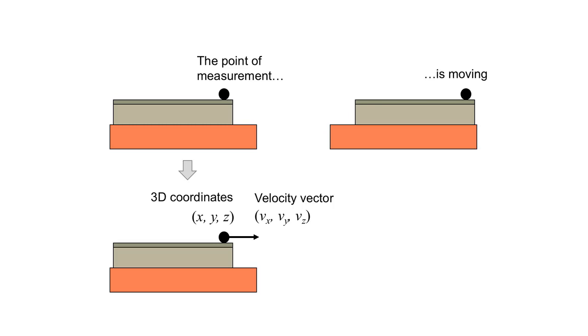This means a Terrestrial Reference Frame must provide a set of coordinates that takes into account that they are moving. If we define the 3D coordinates of a location at some point in time, we can introduce a velocity vector to compute its position at any date we want.